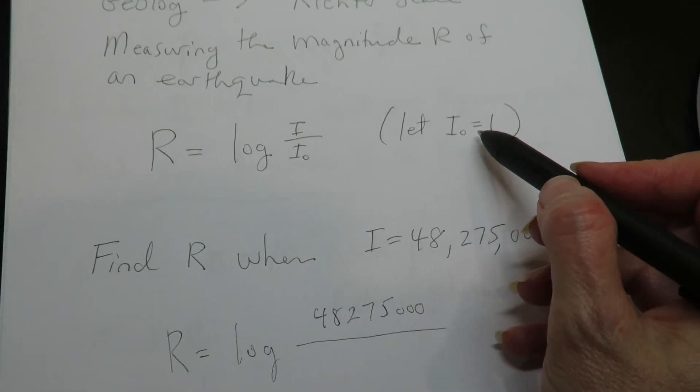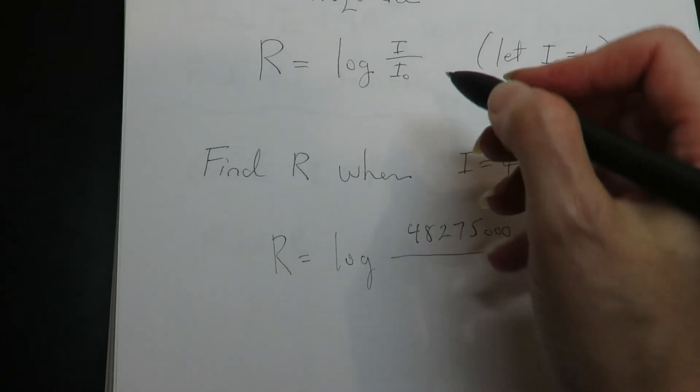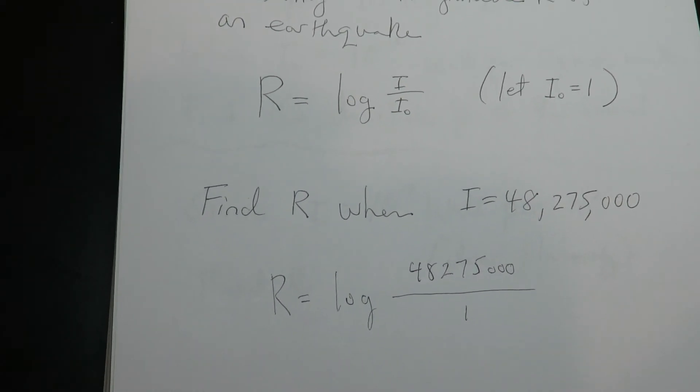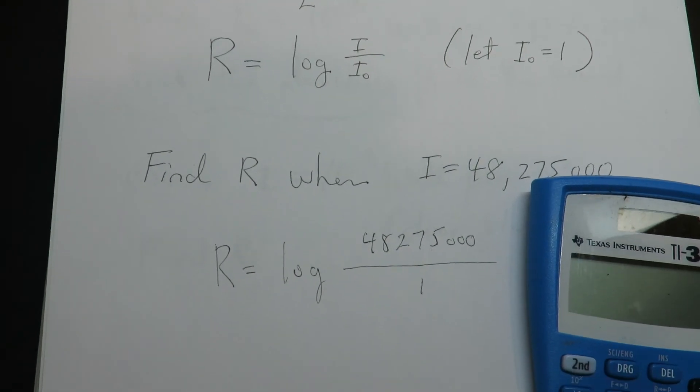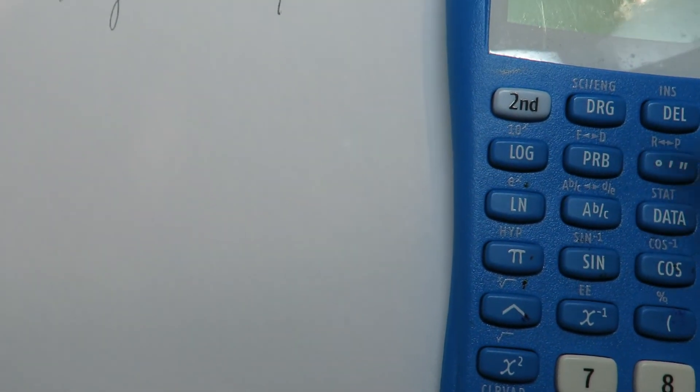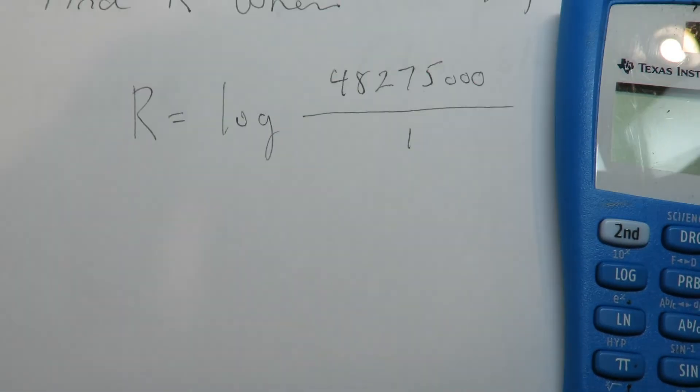And in the very beginning, I sub 0 is defined as 1. So I sub 0 in the beginning is defined as 1. And all you have to do is plug this into your calculator. So you're going to do log. Now make sure you do L-O-G versus L-N. You want base 10 here.